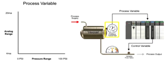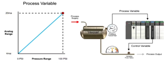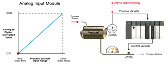The pressure transmitter, identified as the process variable, converts 0 to 100 PSI to a 4 to 20 milliamp signal. With a linear relationship, 0 PSI measured at the transmitter produces a 4 milliamp signal, and at 100 PSI a 20 milliamp signal is produced. The analog input module converts the 4 to 20 milliamp signal to a digital value ranging from 3,277 to 16,384. A 4 milliamp signal results in a value of 3,277 and a 20 milliamp signal results in a value of 16,384.